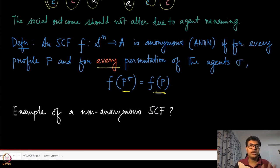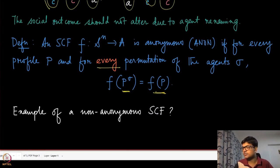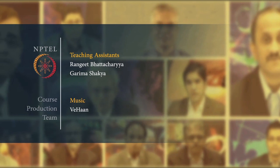In the next module, by introducing anonymity and enforcing it, we are actually ruling out dictatorial allocations.